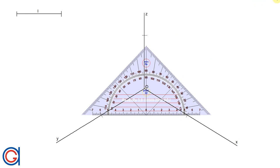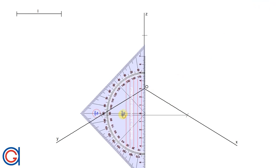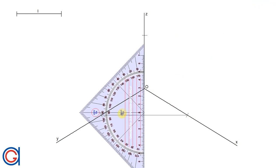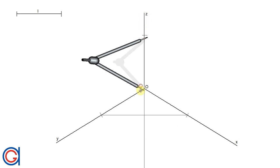The next step is to elongate the z axis below the origin as shown here, and where this line intersects the previously drawn horizontal line it is going to be the center point of the next arc that we are going to draw.